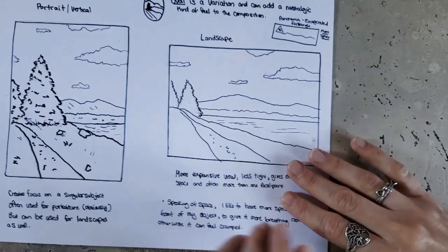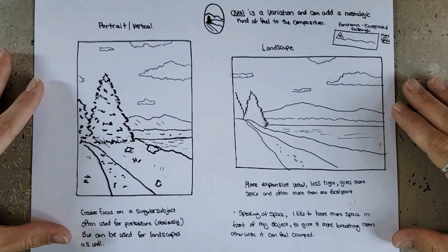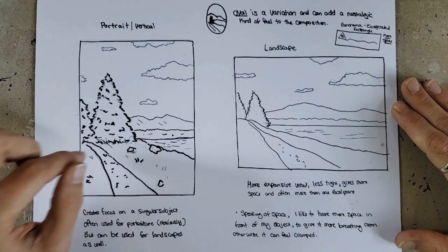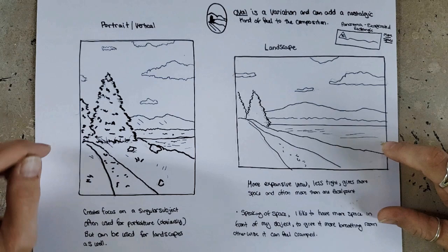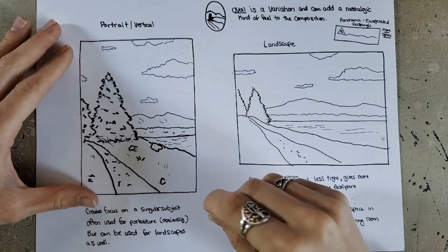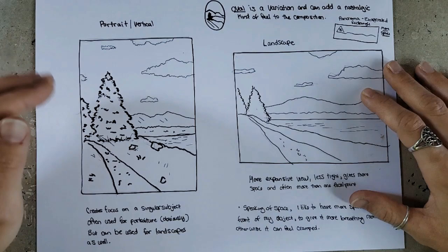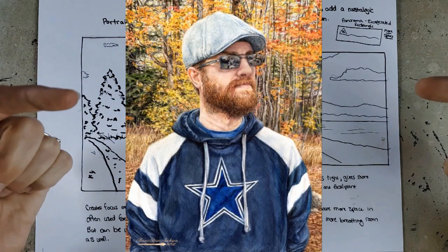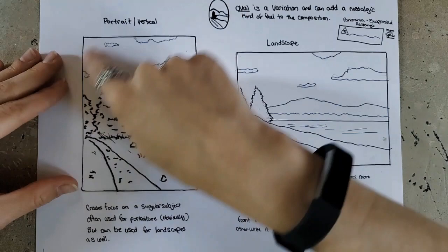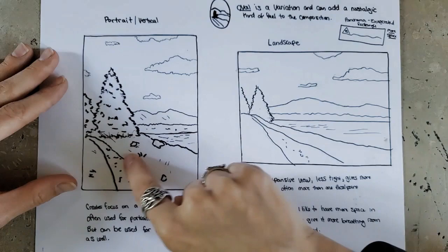The first set of examples is talking about composition itself. When you are getting ready to do a piece, one of the first things you'll want to decide is if you're going to do it in a vertical or horizontal format. These are known as portrait and landscape in the art world. Portrait creates focus on a singular subject — it zeroes in. A lot of people use it for portraits, as I did here for the portrait of my husband in colored pencil. But you can also use it to zero in on certain landscapes and elements as well.